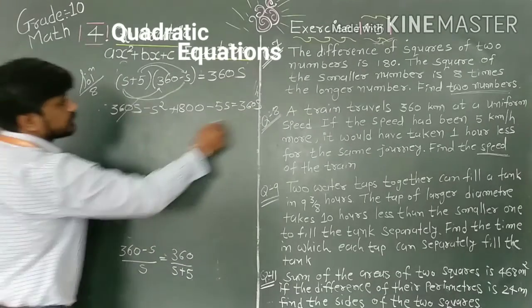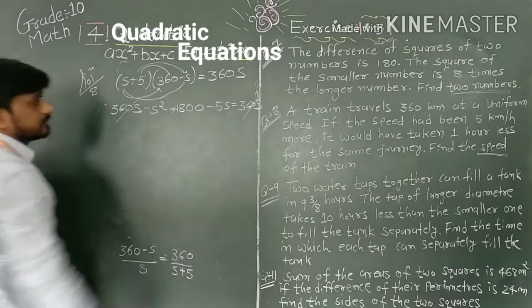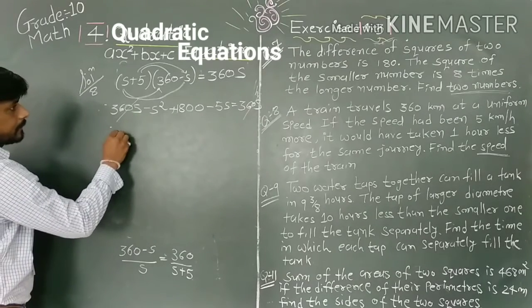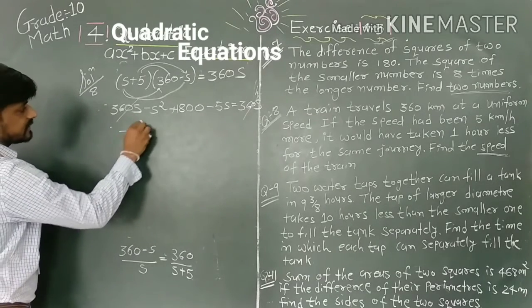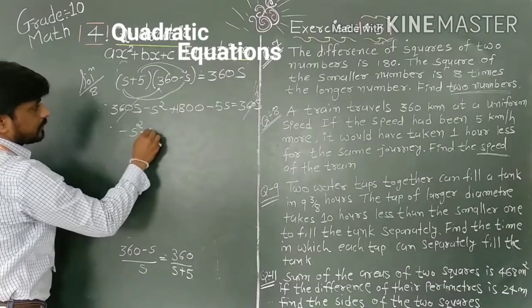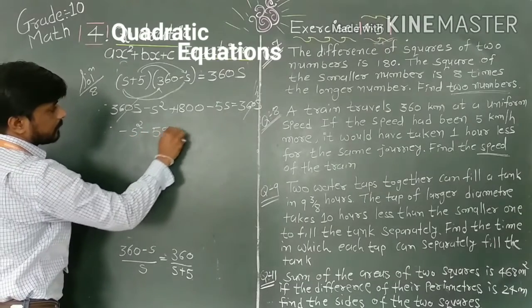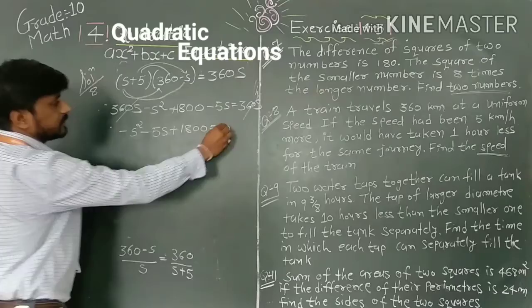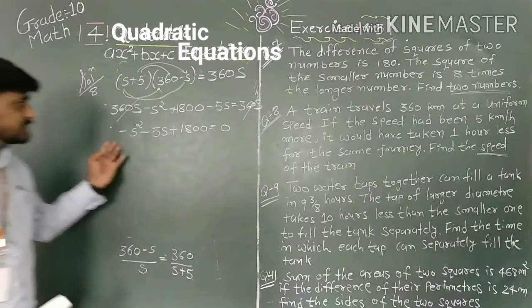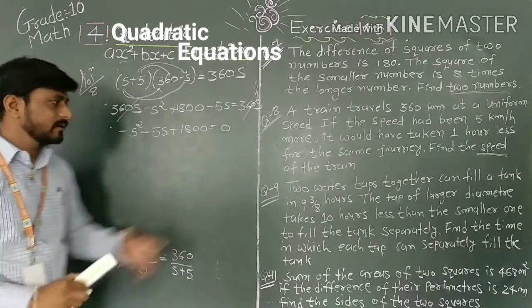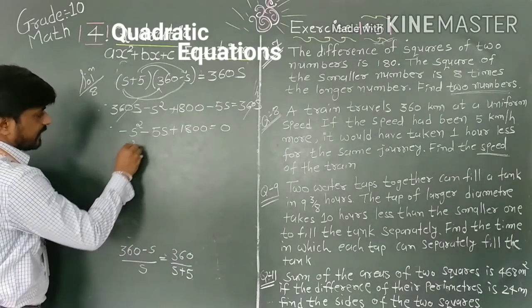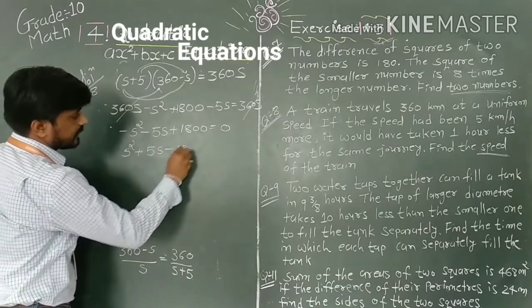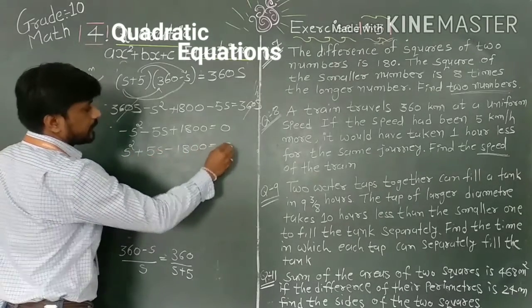What remains is -s² - 5s + 1800 = 0. Changing all signs gives s² + 5s - 1800 = 0.